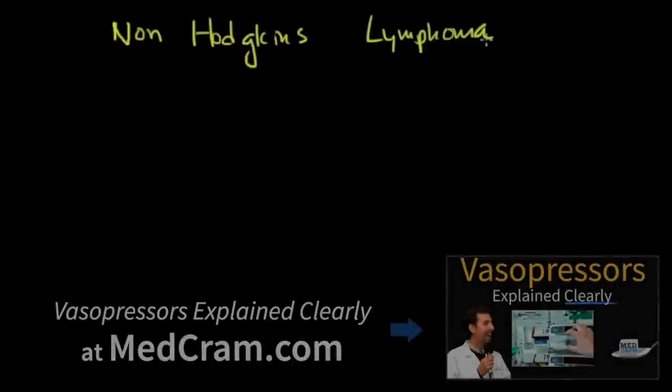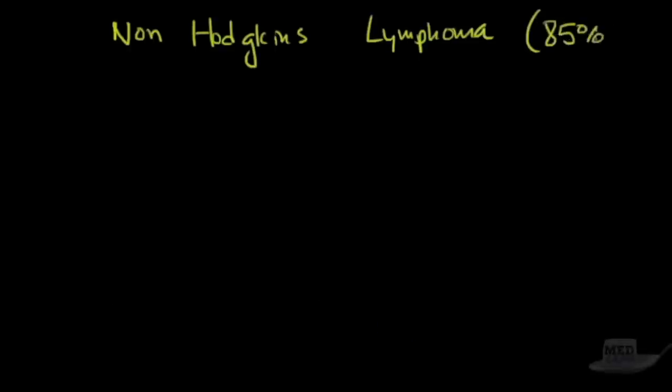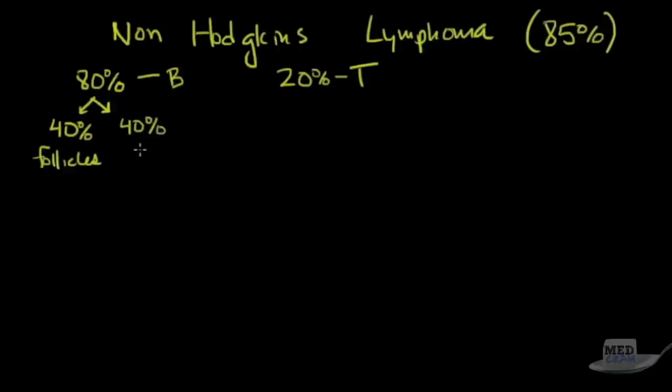Let's talk about specifically non-Hodgkin's lymphoma and the different types. These make up about 85% of all lymphomas. So only a small fraction are Hodgkin's lymphoma. Specifically, 80% of non-Hodgkin's lymphoma are B cells, whereas only 20% are T cells.